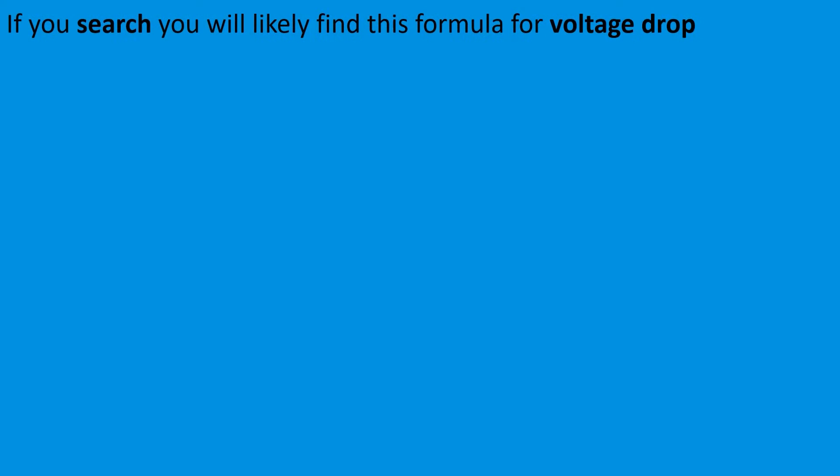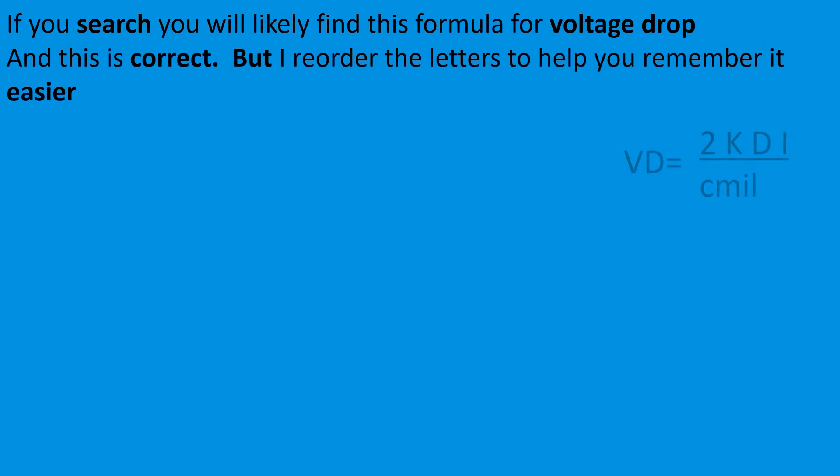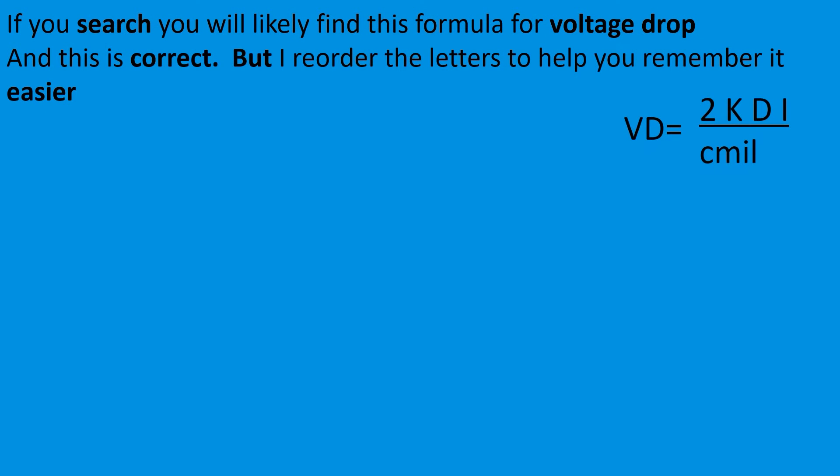Okay guys, if you do an internet search, you'll likely find this formula for voltage drop right here. And this is correct, but I've reordered the letters to help you remember it easier. If you get this, you'll have this for the rest of your life. This is how I order it. It's the same equation. It's voltage drop equals 2KID over cmil. And we're going to break all this down here in the next few slides.